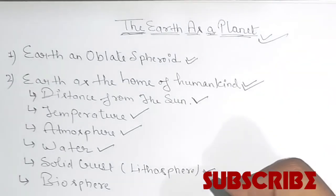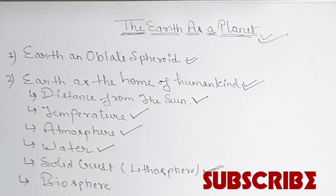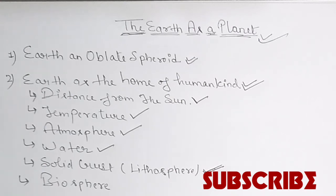The next factor is the solid crust, also called the lithosphere — the solid part of the Earth's crust. Due to the weathering of rocks — the breaking and disintegrating of rocks into small particles — the surface of the Earth has been formed and it provides soil. This layer supports plant life on the Earth. The soil provides various nutrients that are necessary for plant growth, which in return supports all forms of animals and plants, directly or indirectly.